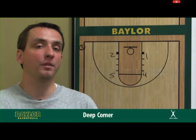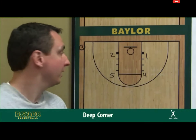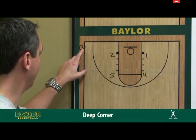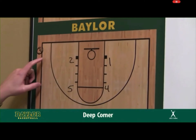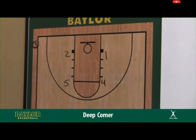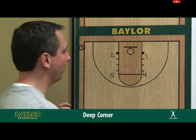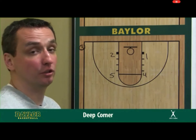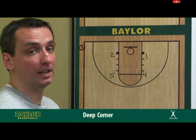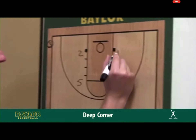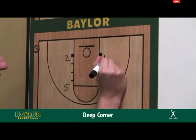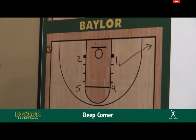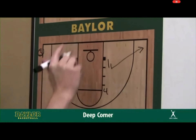Our fourth sideline out-of-bounds scenario has the ball in the deep corner. We have the three in the deep corner or anywhere closer to the deep corner. We're looking for a high-percentage shot — whether a two or a three in this situation. The one is going to come up and break to the corner; we want to clear him out.